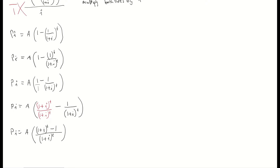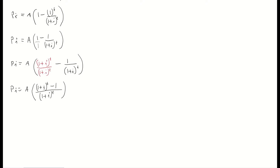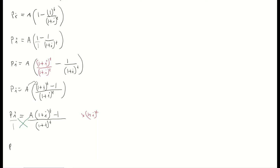The next step is to remove the overall bracket by multiplying in the A. So this becomes: IP equals A times ((1 plus I)^T minus 1) all over (1 plus I)^T. Now, putting that IP over 1, I can eliminate the denominator of (1 plus I)^T by multiplying across by (1 plus I)^T on both sides. That gives us: P times I times (1 plus I)^T equals A times ((1 plus I)^T minus 1).